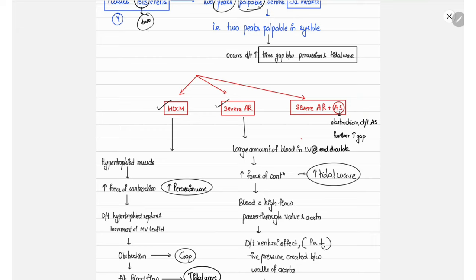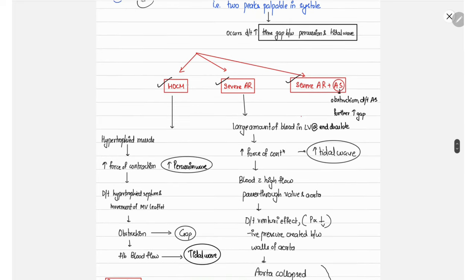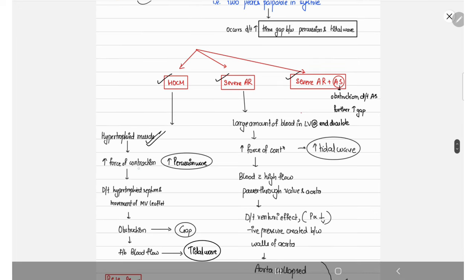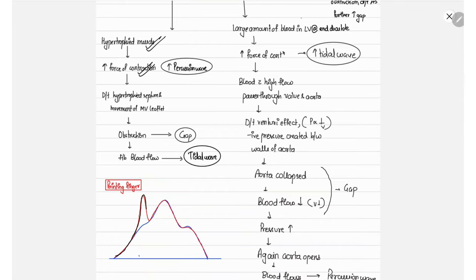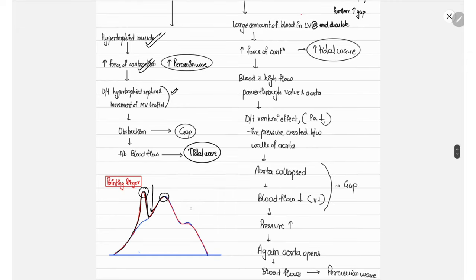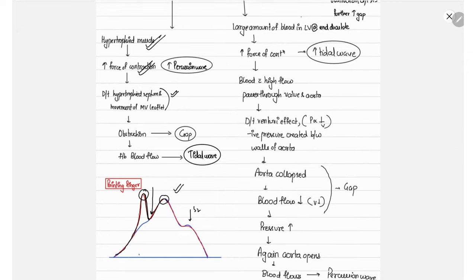Pulsus bisferiens occurs in HOCM, severe aortic regurgitation, and severe aortic regurgitation plus aortic stenosis. In HOCM, the hypertrophic muscle causes increased left ventricular contraction, increasing the amplitude of the percussion wave. Then, due to dynamic obstruction in HOCM, there is a delay in blood flowing from the left ventricle to the carotids, creating a gap between the percussion and tidal waves — so both are palpated separately but before S2.